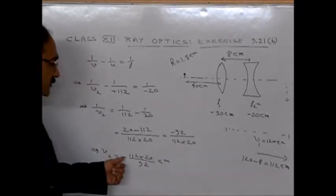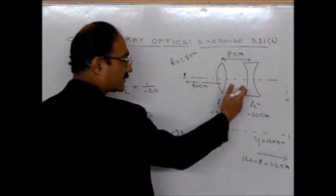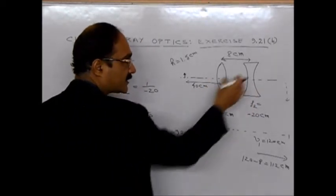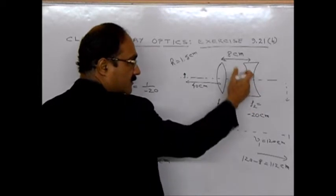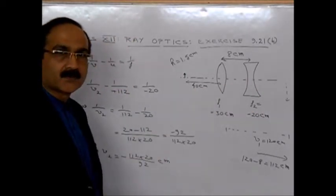Therefore, V2 will be minus 112 into 20 divided by 92 cm. So V2 has come out to be negative. That means the final image will be somewhere on this side, on the negative side, from this focal length.